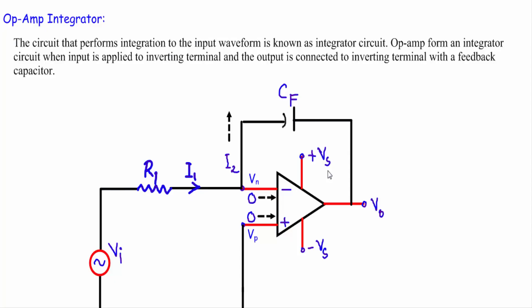In this video I am going to show you another linear application of operational amplifiers. Linear applications means the operational amplifier will operate in the linear region with negative feedback. I will show you the operational amplifier integrator circuit. The integrator circuit is that circuit which performs integration on the input waveform, and the output will be the integration of the input waveform.